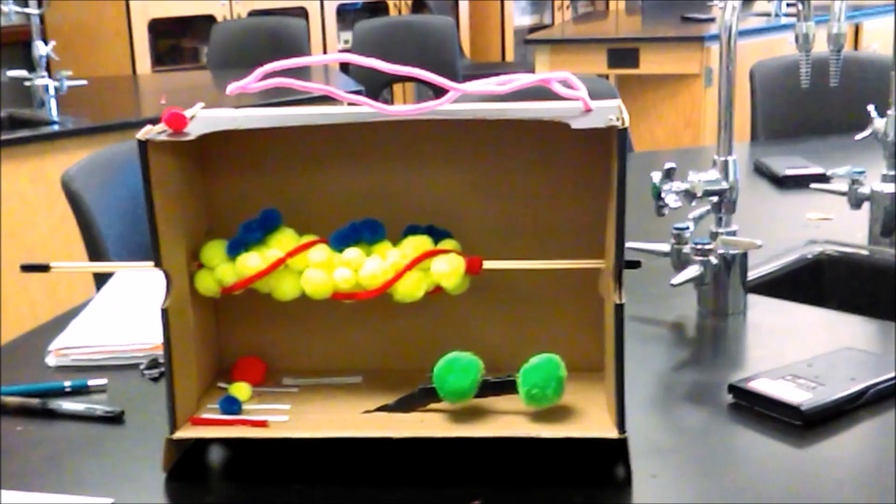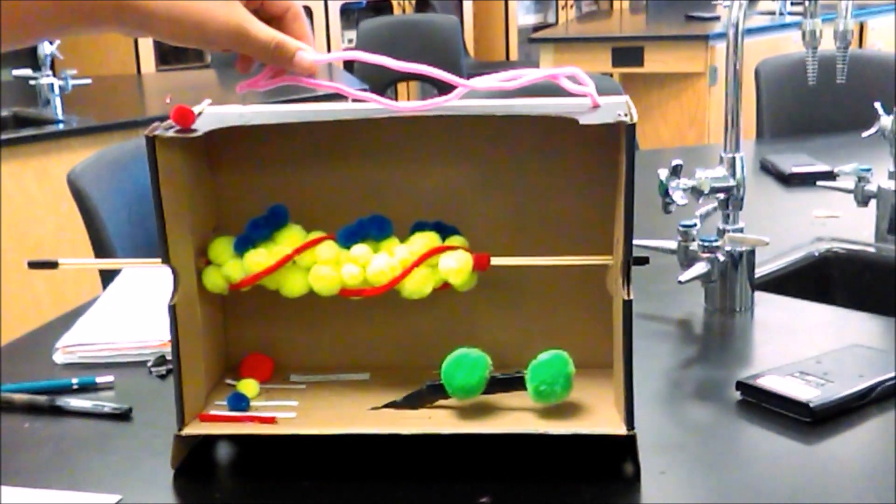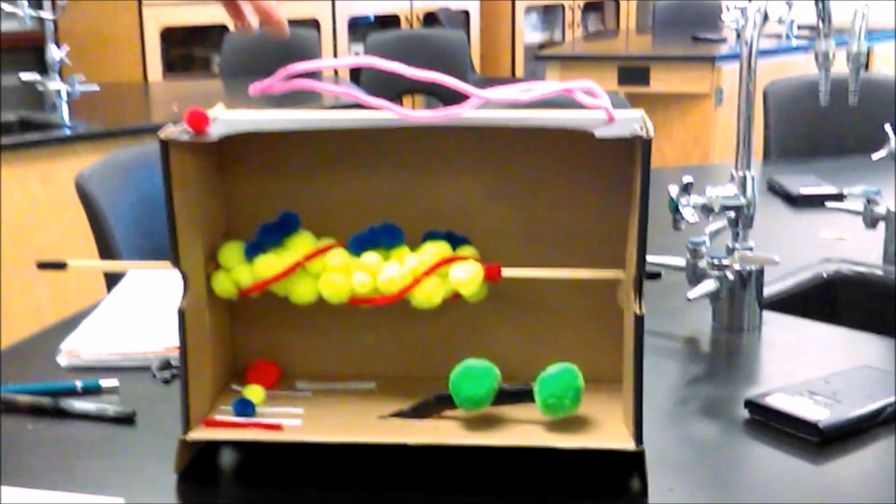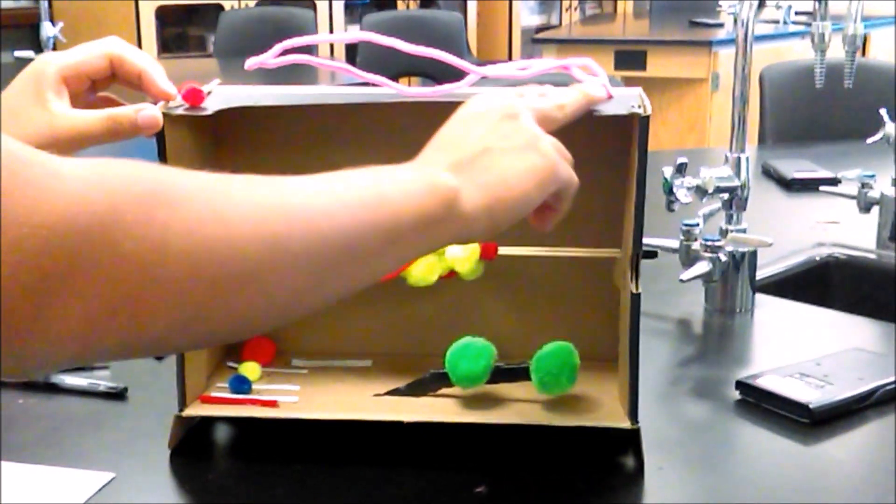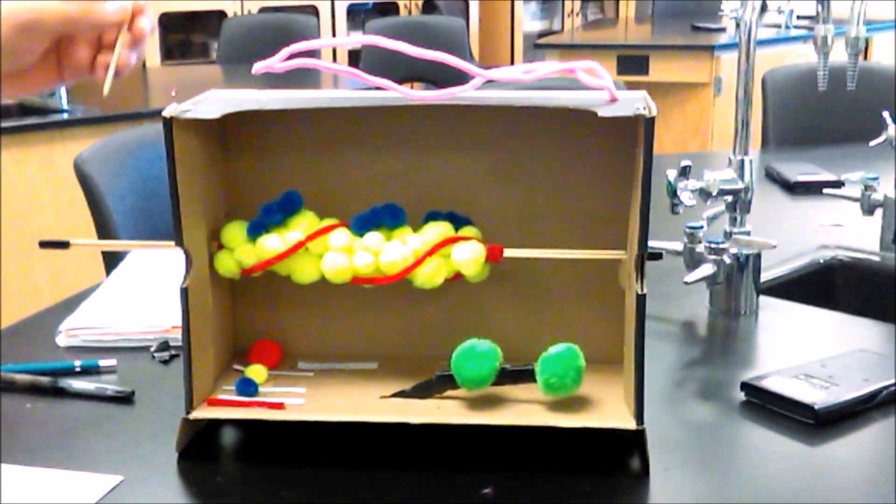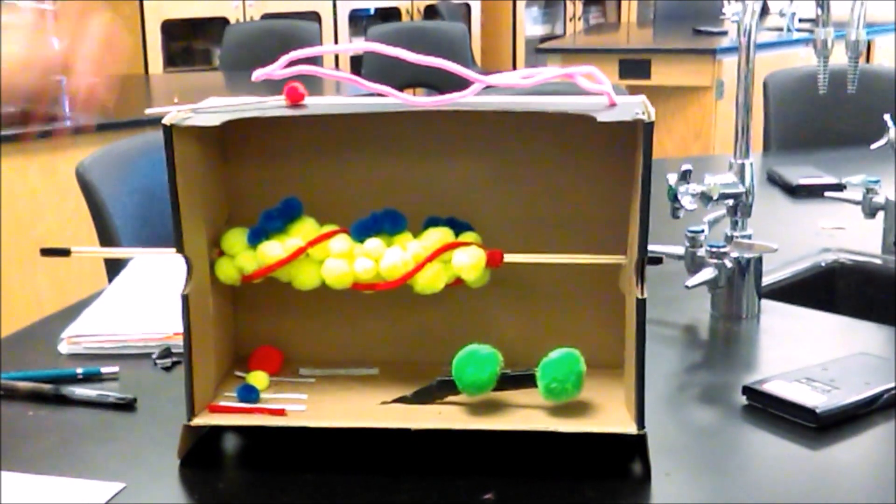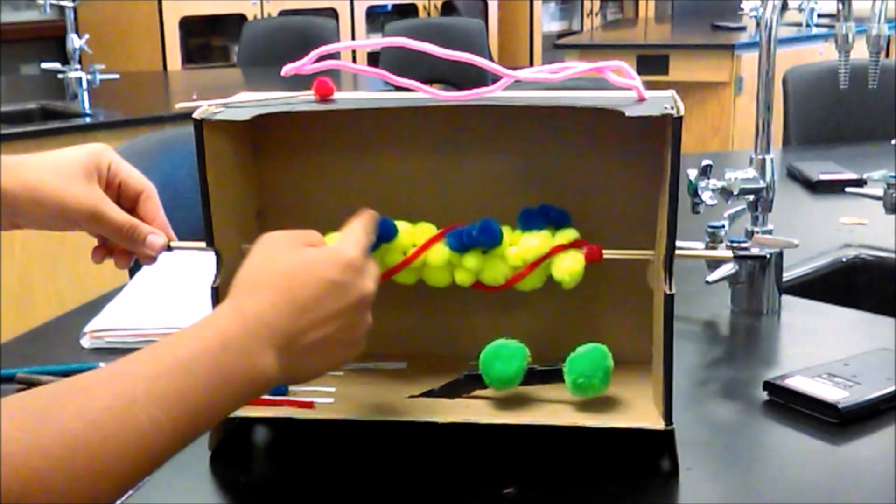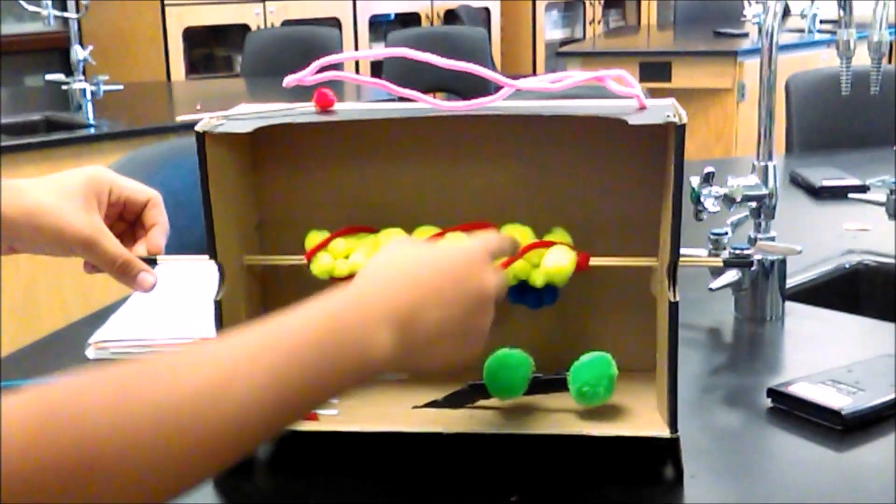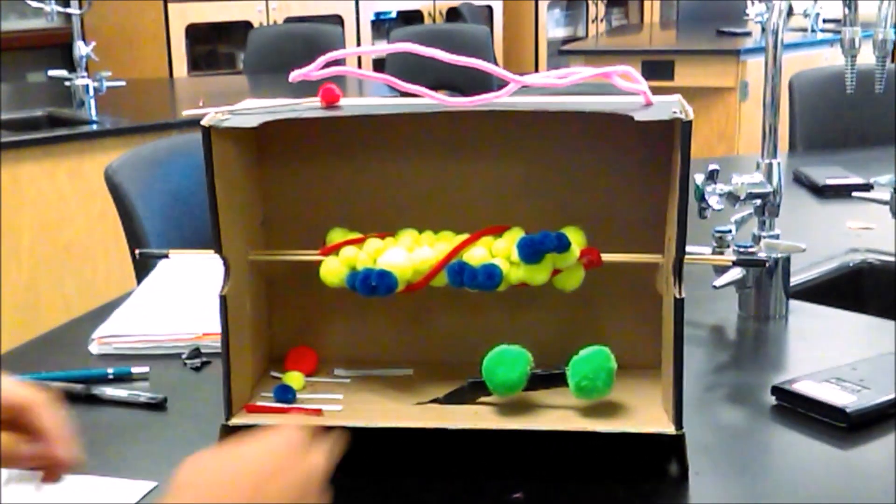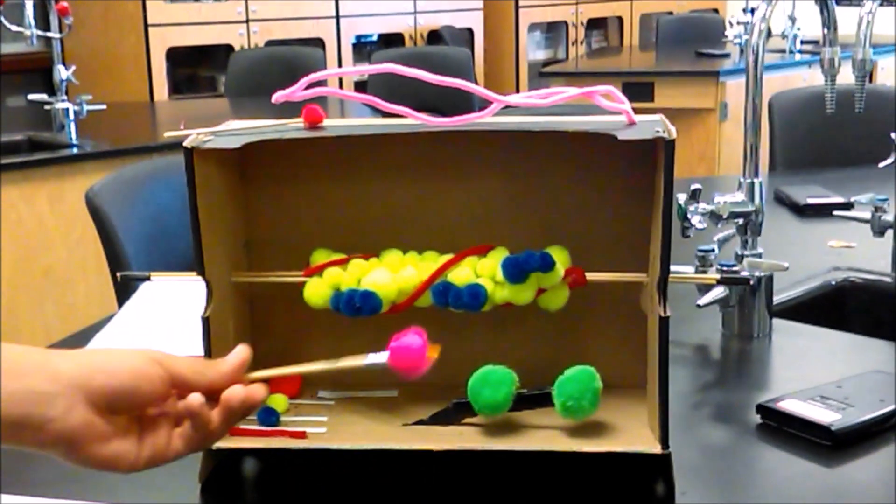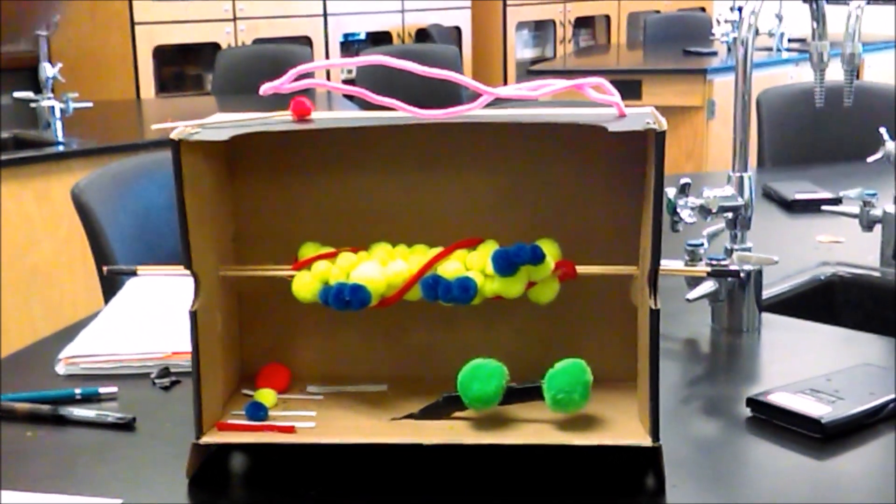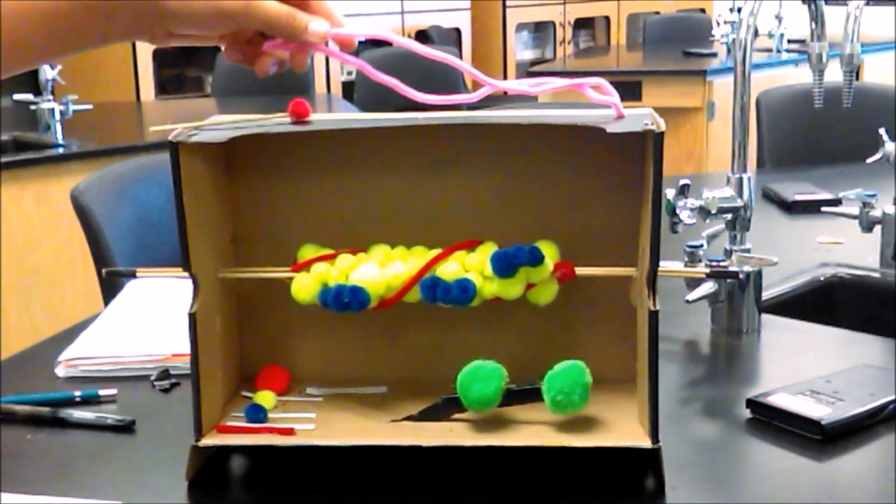Here we have our muscle contraction model. Up here, this pink pipe cleaner is a neuromuscular junction. Up here is the sarcoplasmic reticulum. Right here we have our calcium ions, and down here we have our thin filament, which is made up of actin, troponin, and tropomyosin. Down here we also have our myosin and our thick filament, as well as our ATP.